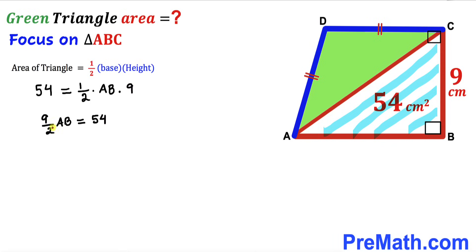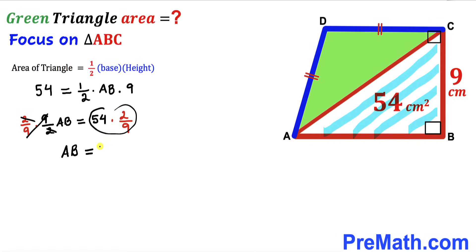Multiplying both sides by the reciprocal 2/9, the 9s and 2s cancel. So AB = 54 × (2/9) = 12 cm.